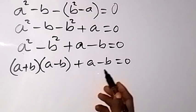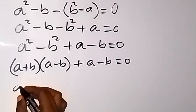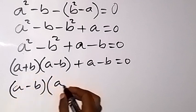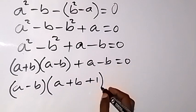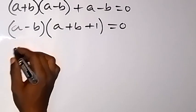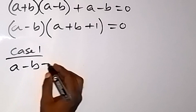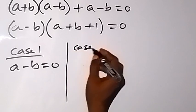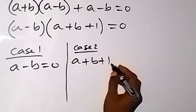From here, we take out the common factor a minus b. We have a minus b times a plus b plus 1, equals 0. So we have two cases: case 1 — a minus b equals 0; and case 2 — a plus b plus 1 equals 0.